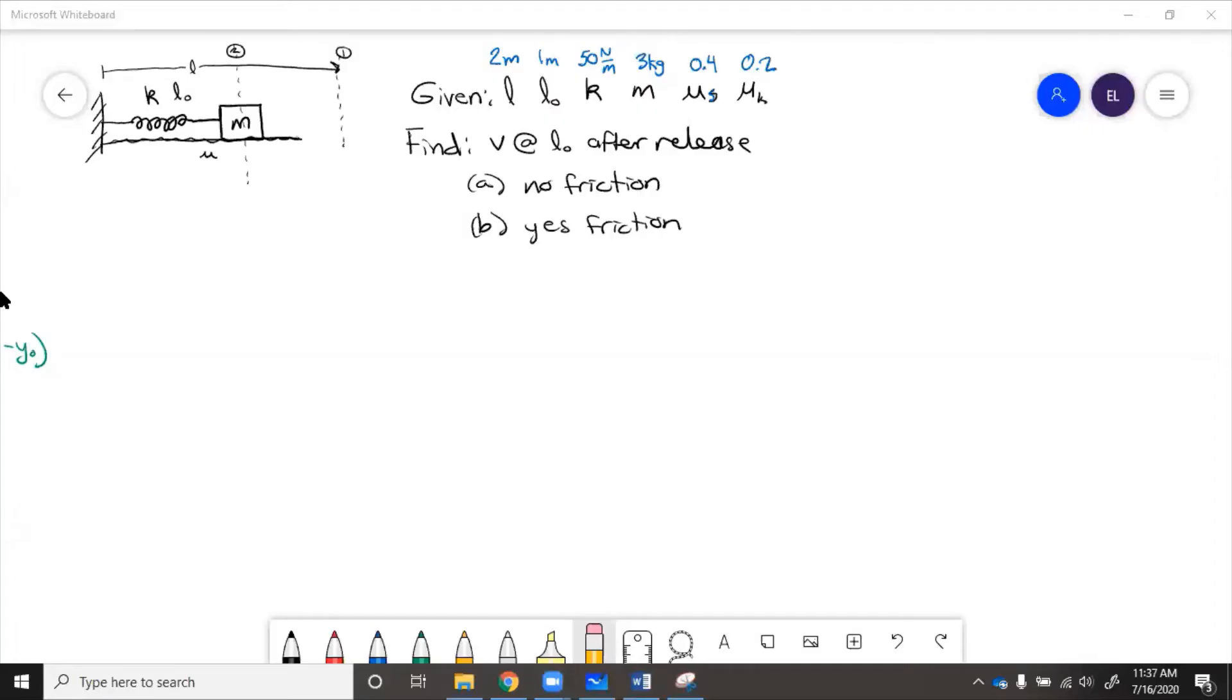In this example, we have a mass on a spring on the ground. The spring has constant k, an unstretched length L initial, and then it's pulled out here to state 1 at length of L and then released so it snaps back. Its max velocity is going to be at the L initial when the spring is not stretched. So we want to find the velocity at L initial after it's pulled back and released for no friction and for yes friction.